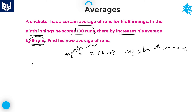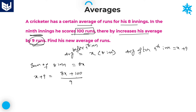The sum of 8 innings is 8x, since average into number of innings equals 8x. After the 9th inning, average is x plus 9. Substituting: x plus 9 equals the sum of 9 innings, which is 8x plus 100 — the 100 runs scored in the 9th inning — divided by 9. Cross multiplying gives 9x plus 81 equals 8x plus 100.